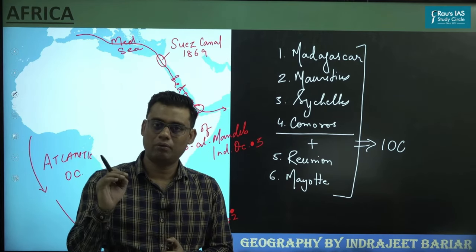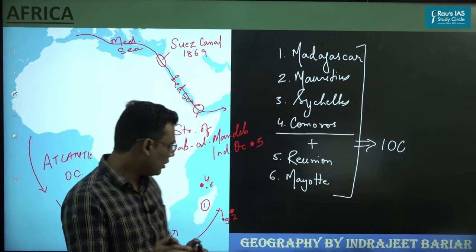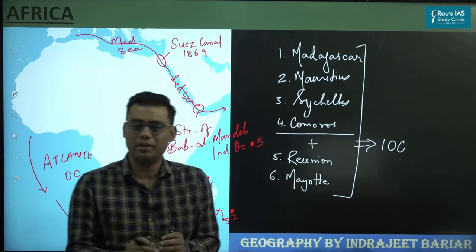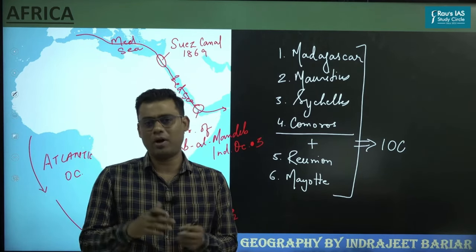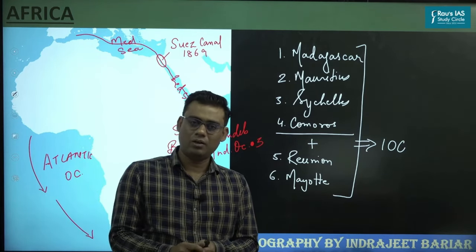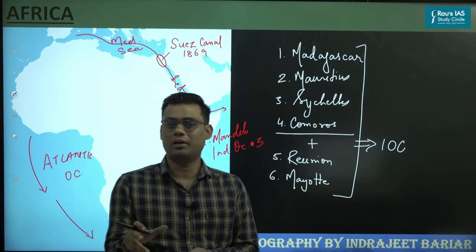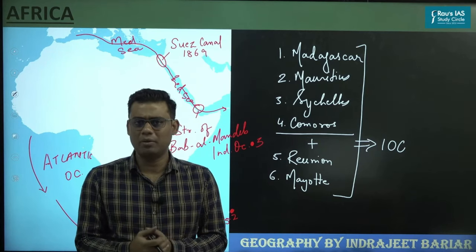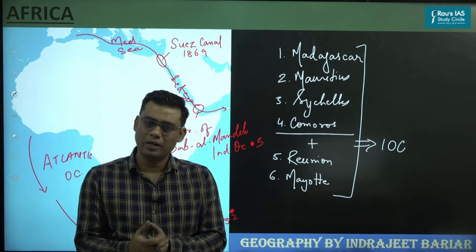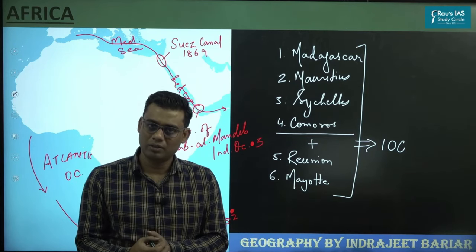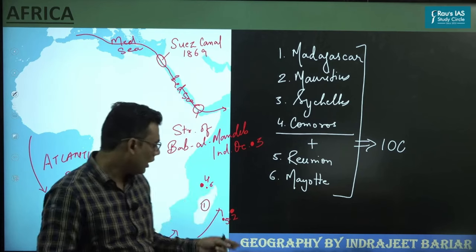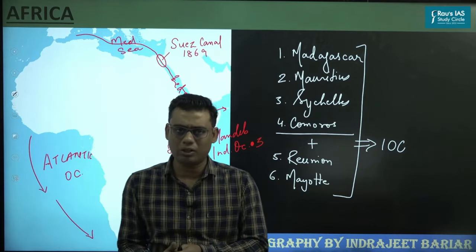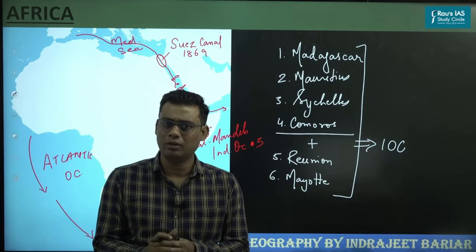The one exception is Madagascar Island, which is not volcanic in origin. In fact, Madagascar Island was a continental part of the erstwhile Gondwana Land, and it separated from the Indian continental mass. So it can be identified as a continental island, while all the other islands are volcanic in origin.